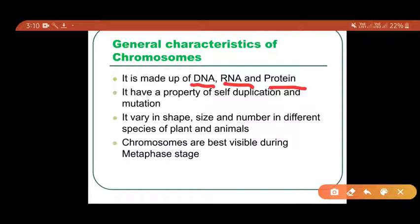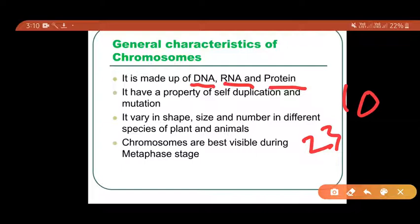Chromosomes vary in shape, size, and number in different species of plants and animals. For example, in human beings there are 23 pairs of chromosomes, whereas in the rat there are 21 pairs. This means the number, shape, and size of chromosomes varies from one animal to another. Chromosomes are best visible in the metaphase stage of the cell cycle.